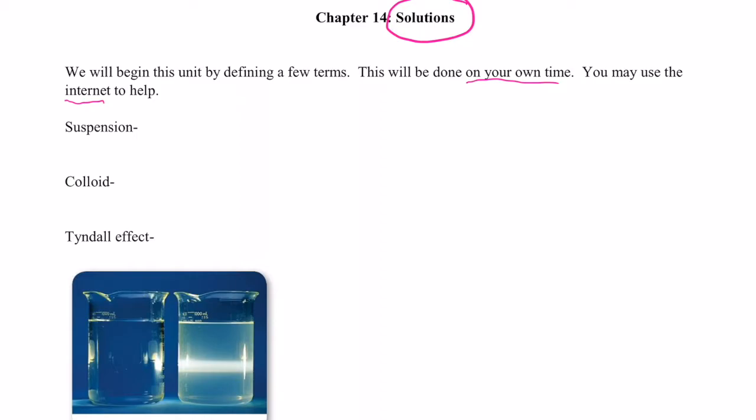So a suspension, you might recall, is a heterogeneous mixture. Do you remember that word, heterogeneous? It means it's not uniform throughout. And it's a heterogeneous mixture where the particles in this mixture settle out over time. So if you could imagine sand and water, the particles of sand will eventually settle to the bottom of my beaker of water. That's a suspension.